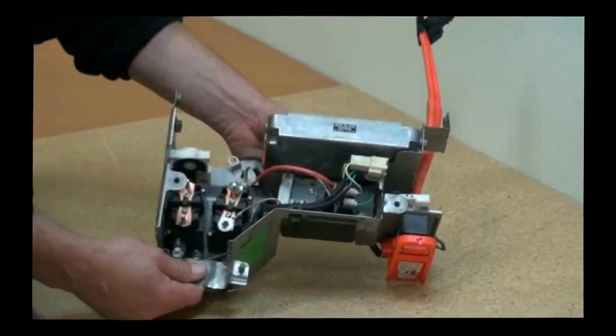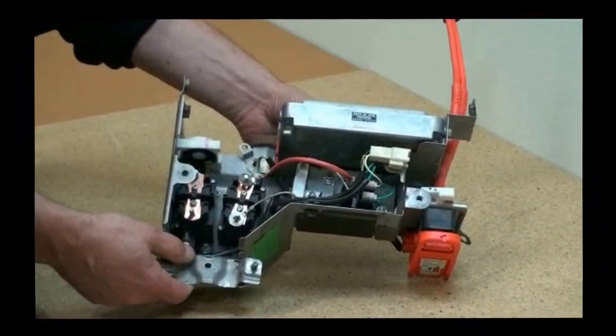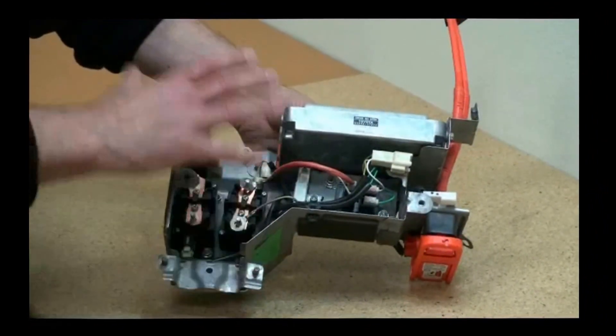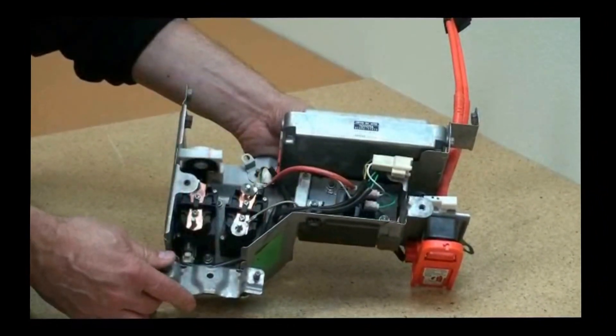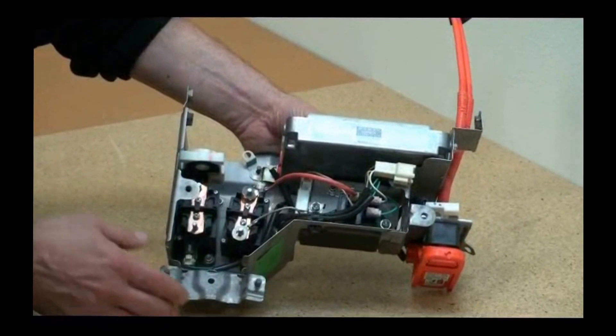What we've done here is we've taken a generation 2 Toyota Prius control system and disconnected it from the battery pack so we can look at it today on video. Let's take a look at the components.